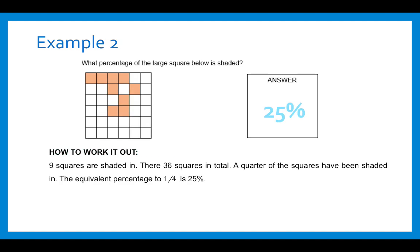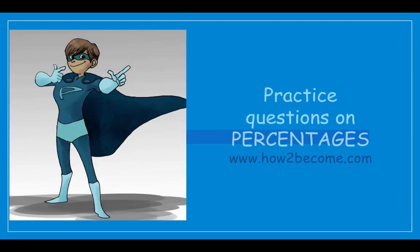Here is another example. What percentage of the large square below is shaded? We have a square where nine squares are shaded out of 36 total, which means a quarter of the squares are shaded — equivalent to 25%.